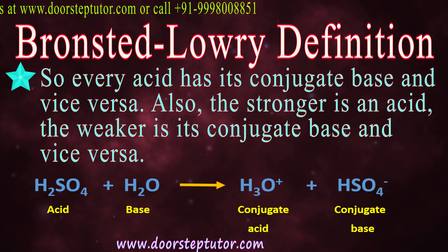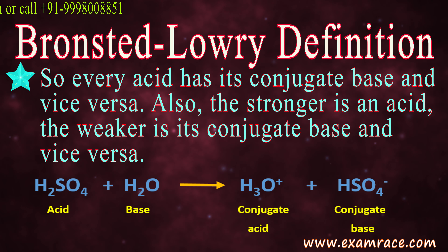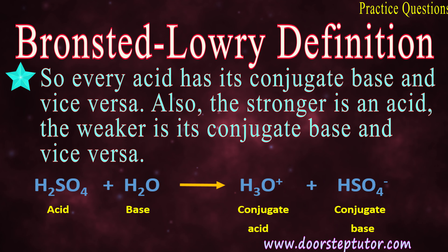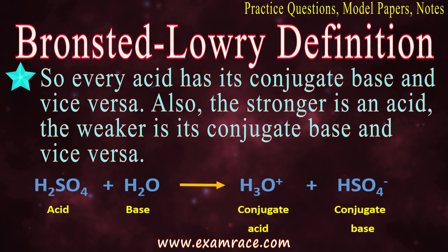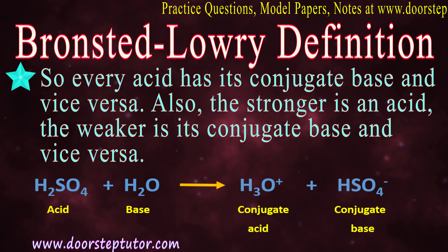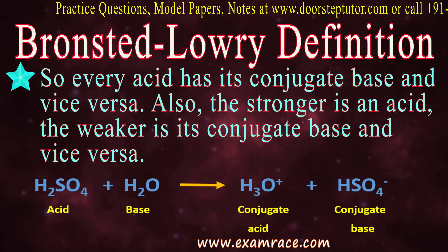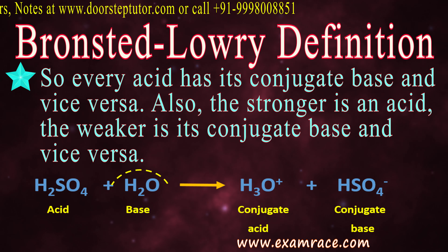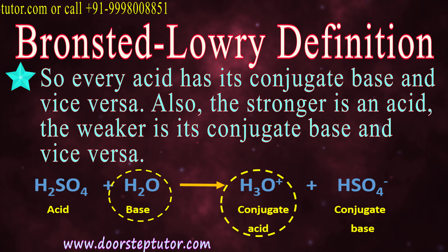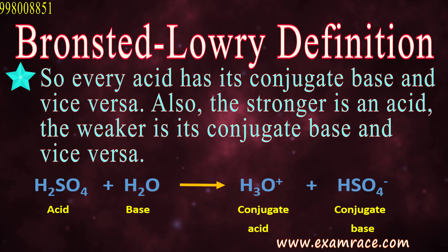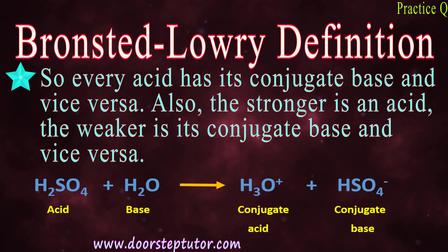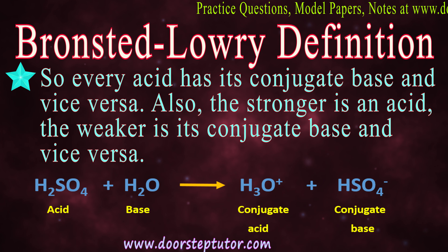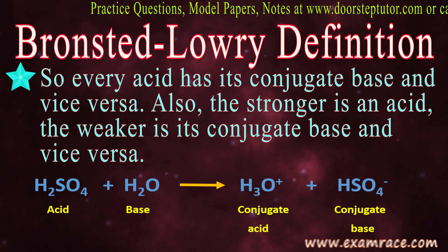Let's understand this with an example. We have a strong acid, H2SO4. When it reacts with a base, H2O, it gives us H3O+ and HSO4-. H2O is changed into H3O+ because H2SO4 donated one H+ ion and turned into HSO4-. So H2SO4, which is an acid, has its conjugate base HSO4-, and H2O, which is a base, has its conjugate acid H3O+. Remember: the stronger the acid, the weaker its conjugate base, and vice versa.